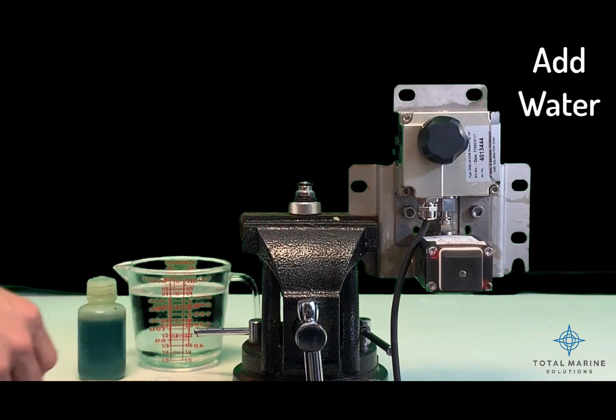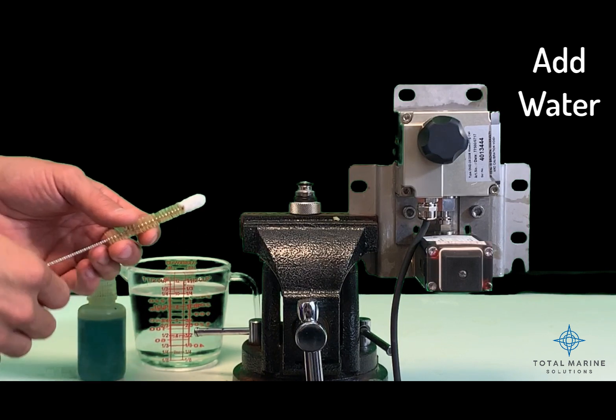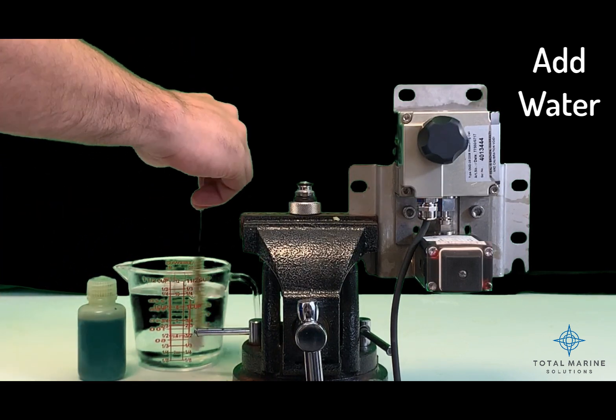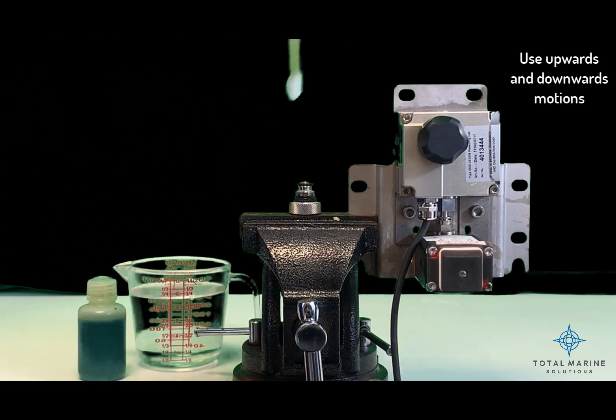Step two: use some water to wet the cell cleaning brush and use upwards and downwards motions through the cell glass.